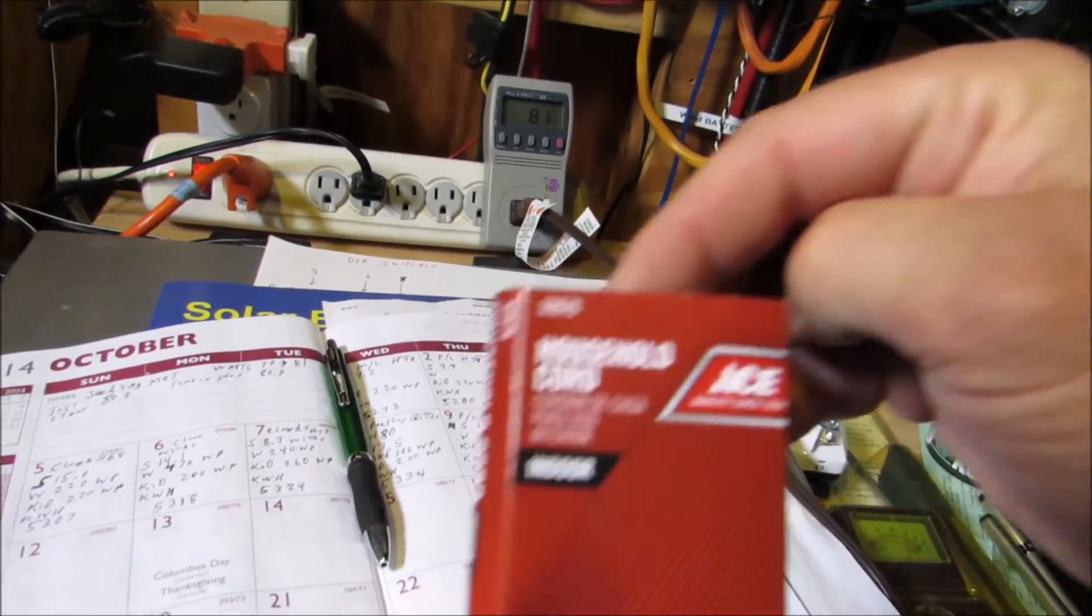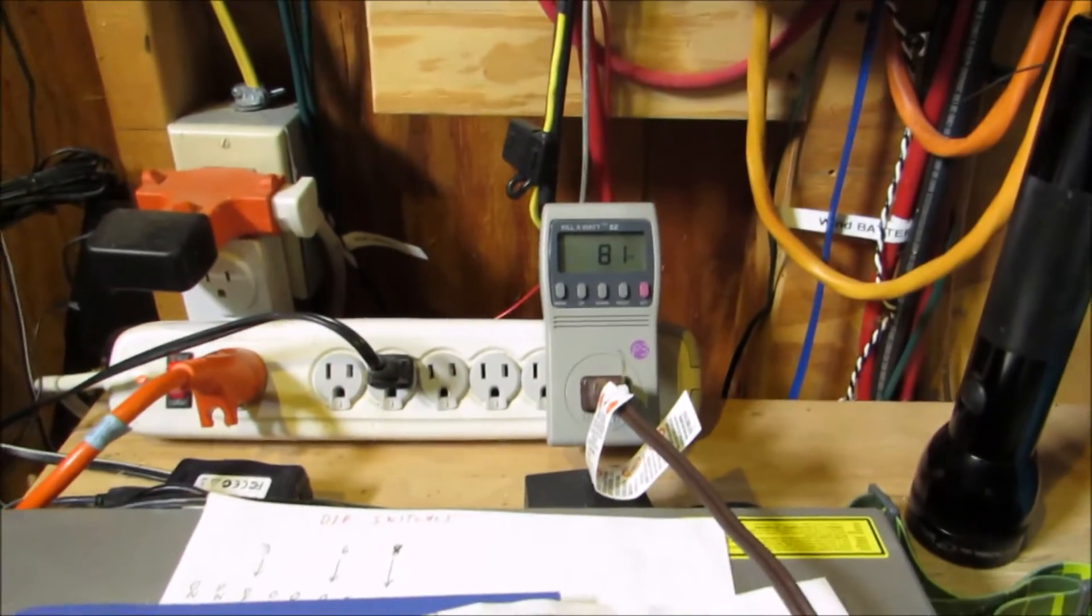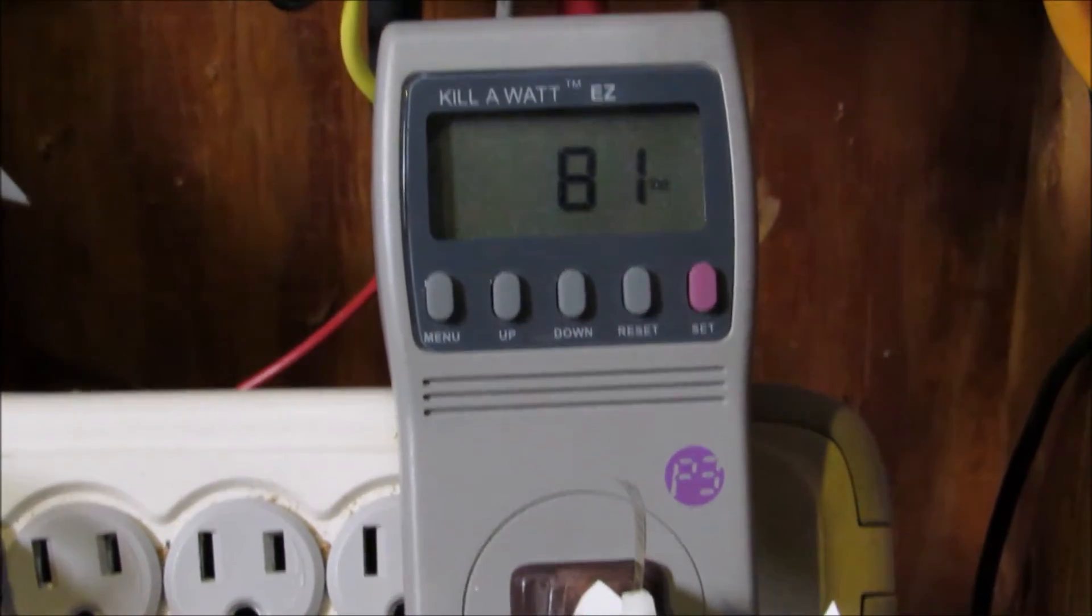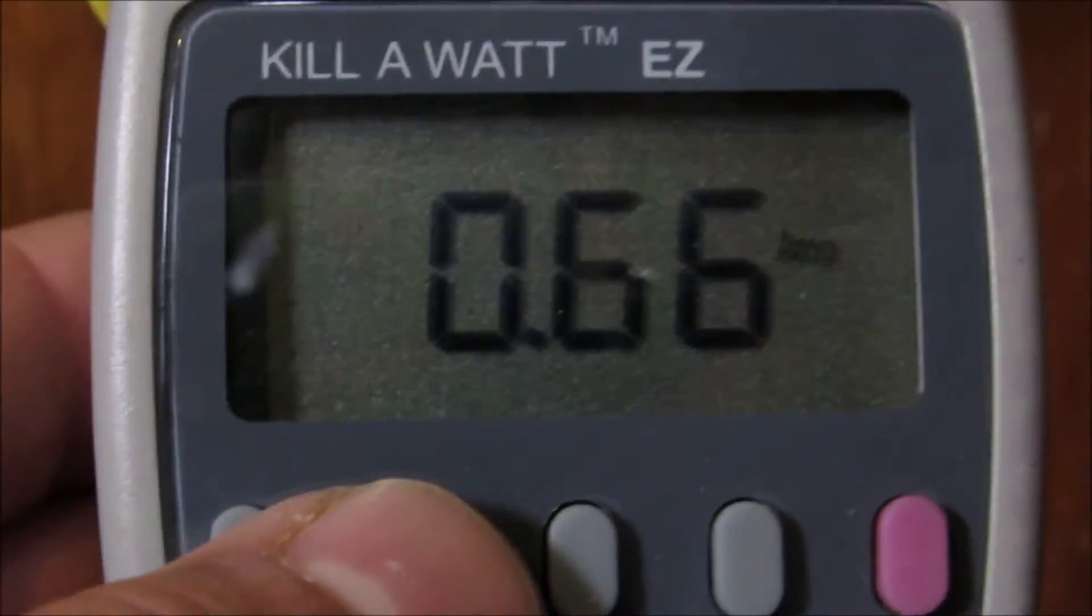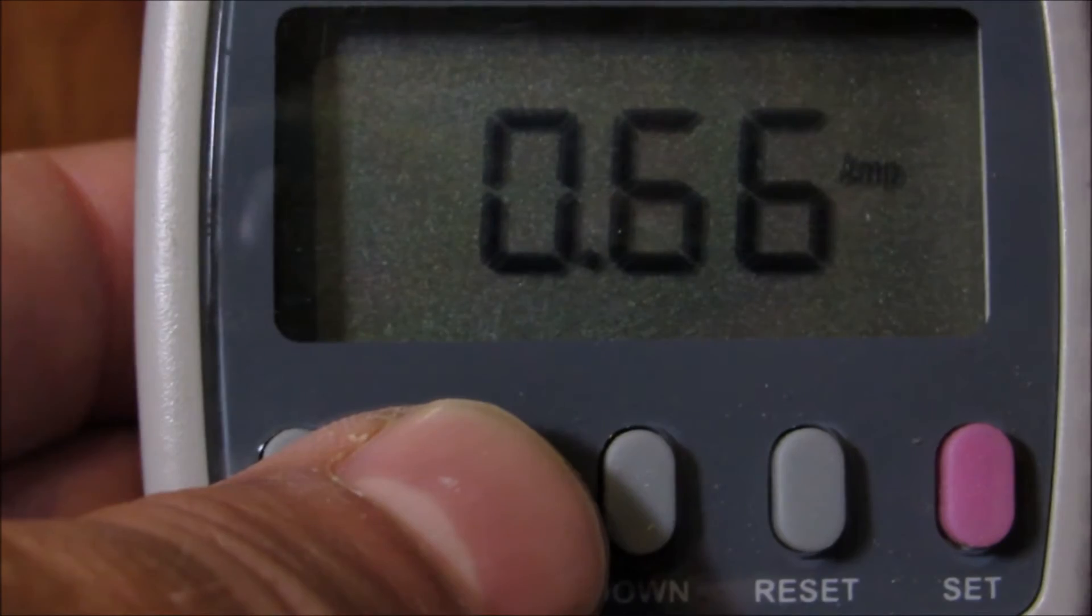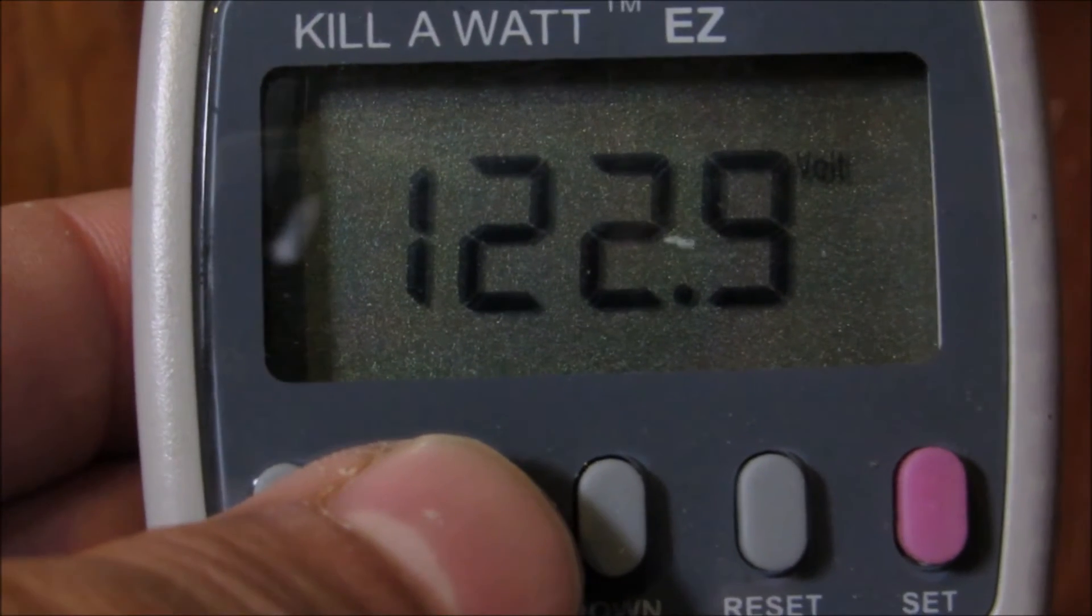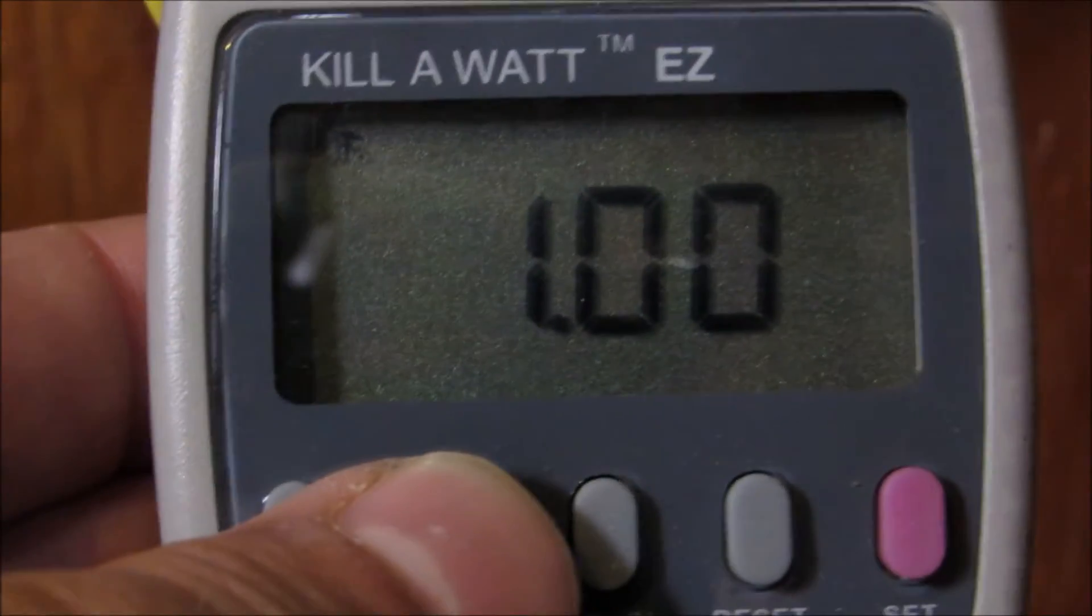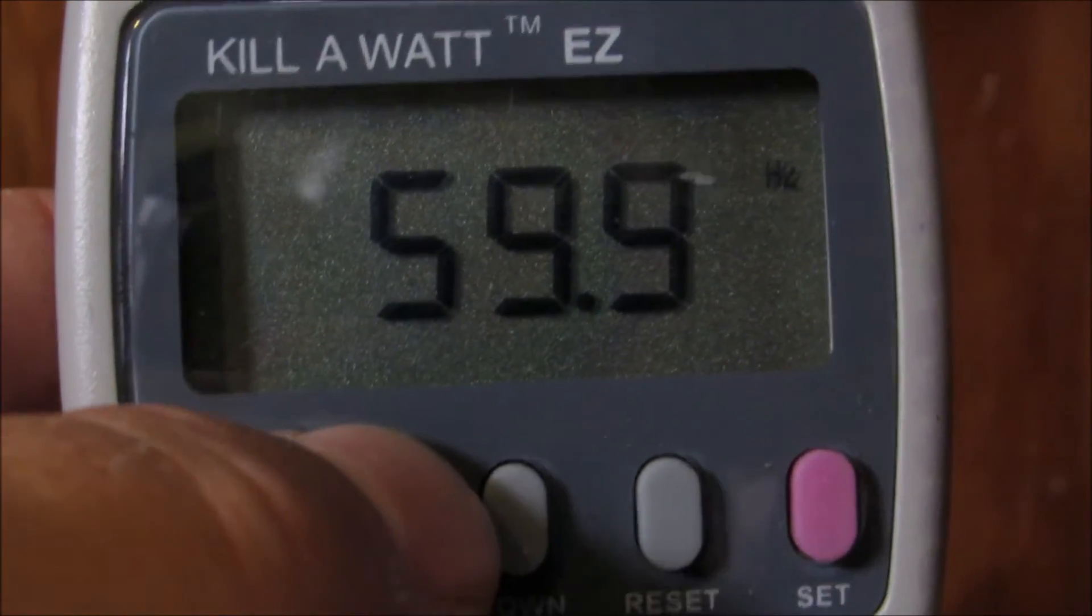It's Ace brand. Anyway, we're drawing 81 watts on the heat mats right now - 81 watts. Let me see if I can... 0.66 amps, so that's way less than an amp, it's like a half amp. 0.66 amps, 122.9 volts. I don't know what the heck that means. It's 60-some hertz.